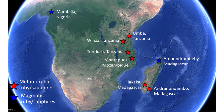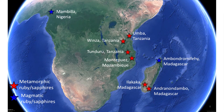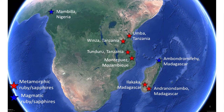Magmatic sapphires and rubies were transported to the surface in volcanic events that are not associated with any continental collisions. These sapphires and rubies are generally considered to have formed at great depth and were transported to the surface by basalts and other volcanic formations that happened to pick them up as they passed through the lower depths of the Earth. Major deposits of magmatic sapphires and rubies occur in Eastern Australia, Southeast Asia, Africa, and North America. Africa also hosts some magmatic sapphire deposits in northern Madagascar and further east in Nigeria.